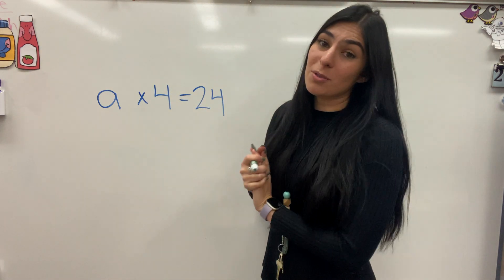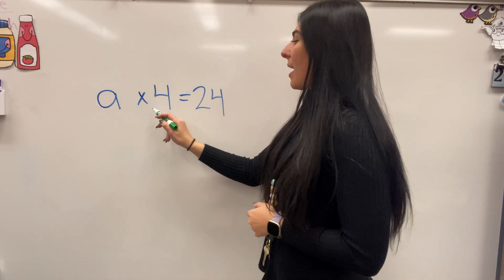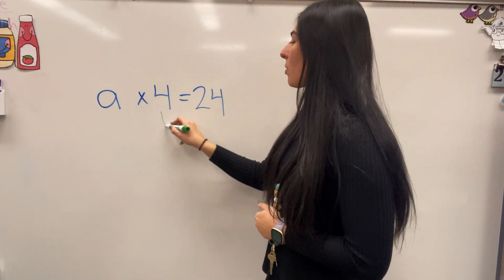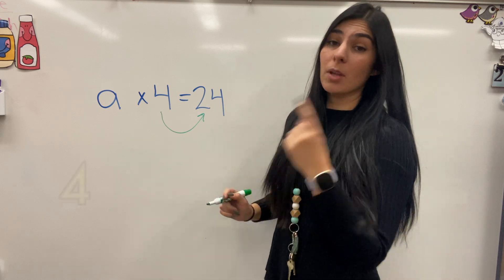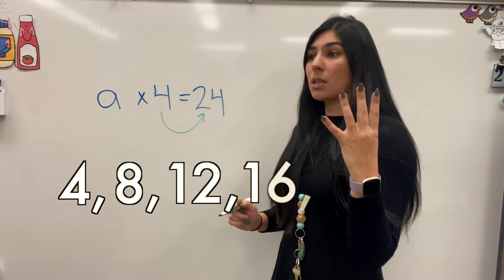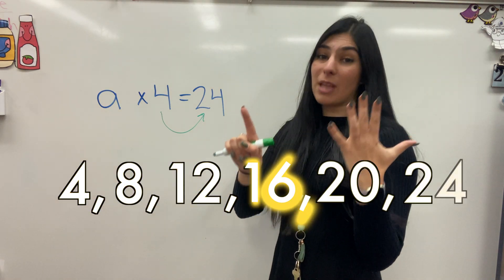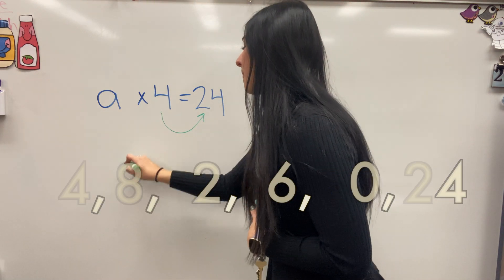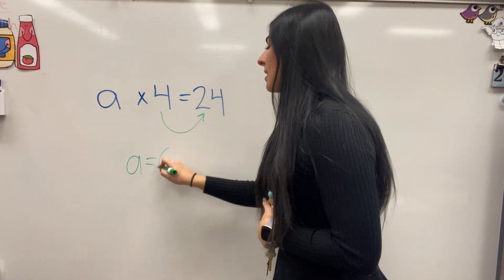So if we want to do the skip count route, we can go ahead and do this four and all we're doing is counting by fours until we get to 24. 4, 8, 12, 16, 20, 24. So that would mean A equals 6.